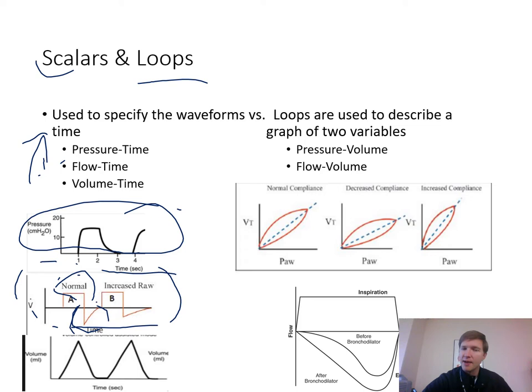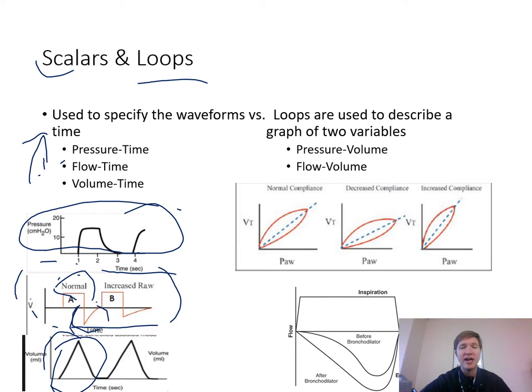Those are your three primary scalars — volume, flow, and pressure compared to time. Loops are different; they compare two variables that are not time-based. The two big ones are the pressure-volume loop, one of my personal favorites, and the flow-volume loop. The flow-volume loop should sound familiar from pulmonary function testing, where we have the patient take a deep breath in and do a forced vital capacity — it is upside down compared to the PFT version.